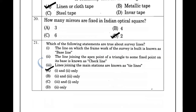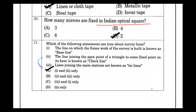How many mirrors are fixed in an Indian optical square? The optical square is used to set out right angles. In an Indian optical square, two mirrors are fixed at 45 degrees to each other.